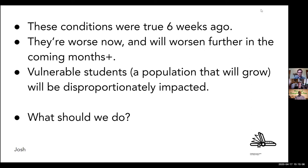All of these conditions precede the current situation — they were true six weeks ago and they're worse now and will worsen further in the coming months. Vulnerable students — a population that will grow as previously not-vulnerable students find themselves in more disadvantageous fiscal circumstances — will be disproportionately impacted. We needed to be aware of these issues before the crisis, but it's of vital importance now. What is the impact of bandwidth, format, synchronicity, access, cost, privacy, and accessibility?